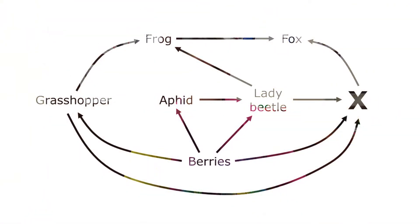So to determine what type of organism should replace the X in this food web, I just need to look at what this organism consumes. When I look at this food web, I can see that this organism consumes berries, grasshoppers, and lady beetles.